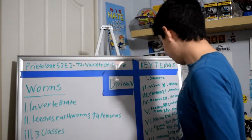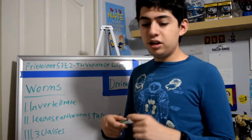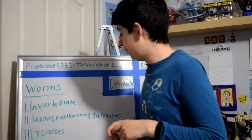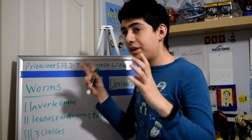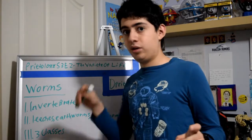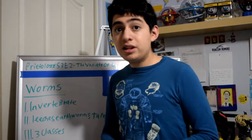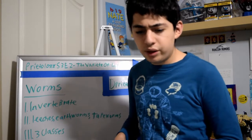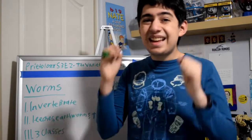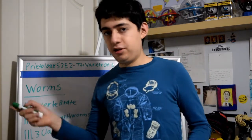We have reached term number 10, which means we only have 9 terms to go. Worms are a type of invertebrate. They include leeches, tapeworms, and earthworms — some pretty nasty creatures. They're divided into three classes: segmented worms, round worms, and flat worms. Fun fact: the longest species of worm is called the nemertian, which can be up to 164 feet — or 50 meters — long. Imagine if you saw that thing crawling in your house — that'd be terrifying.